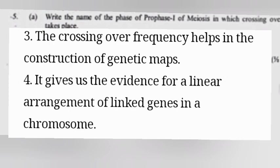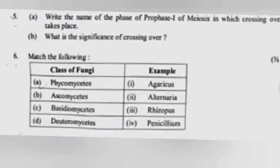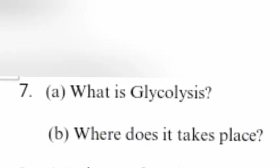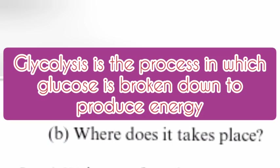Question 6: Match the following. Answer: Class of fungi matched with examples — A) Phycomycetes: Rhizopus, B) Ascomycetes: Penicillium, C) Basidiomycetes: Agaricus, D) Deuteromycetes: Alternaria. Question 7A: What is glycolysis? Answer: Glycolysis is the process in which glucose is broken down to produce energy.